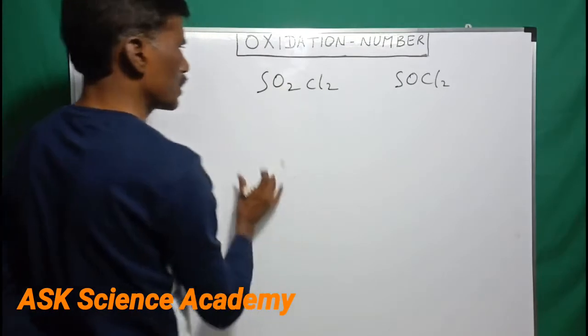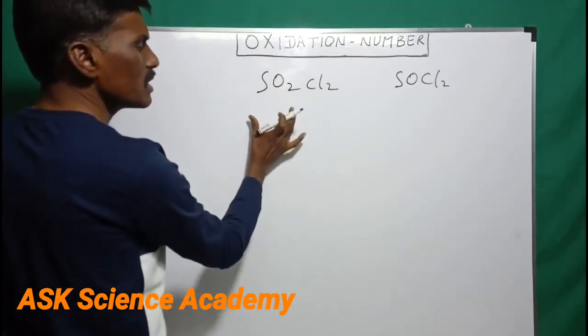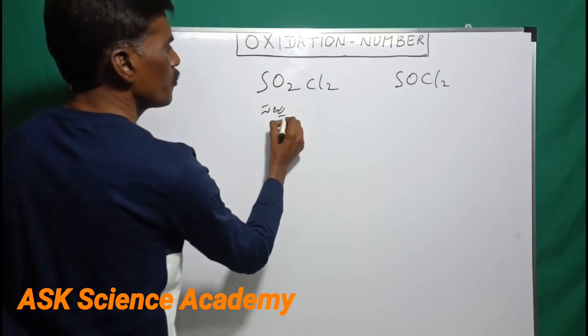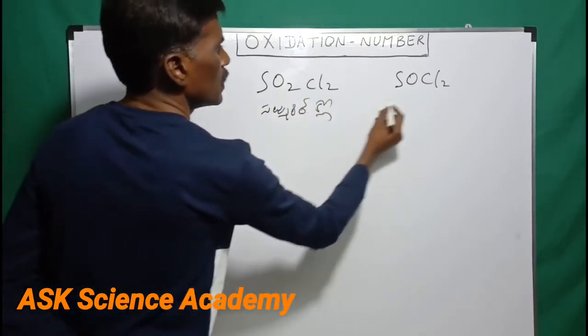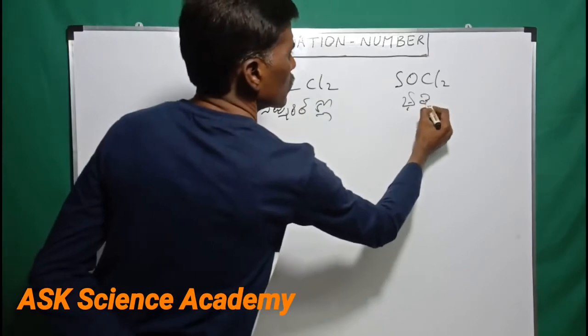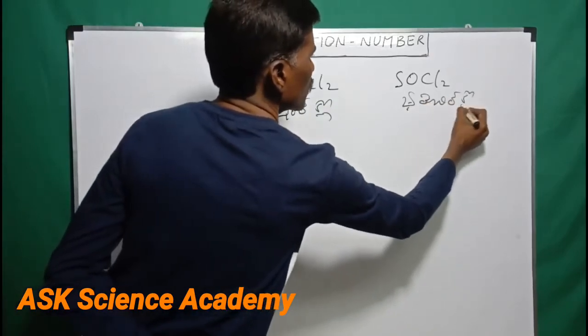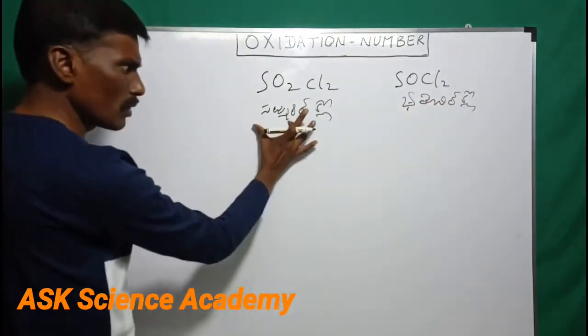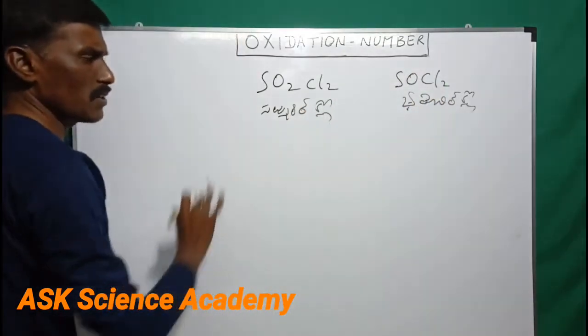SO2Cl2 and SOCl2. SO2Cl2 name is sulfuryl chloride. It is thionyl chloride. Sulfuryl chloride, thionyl chloride.